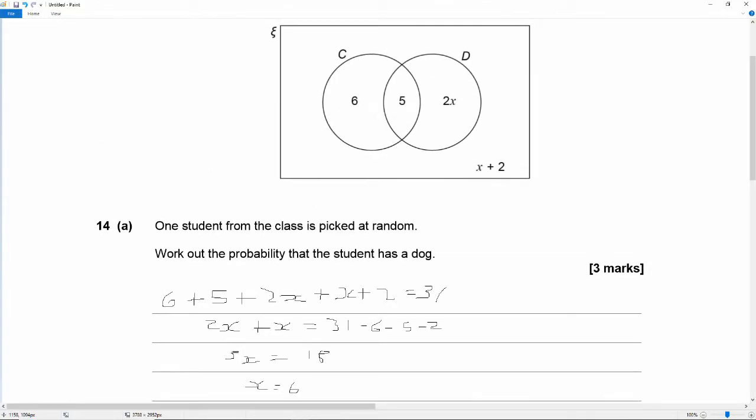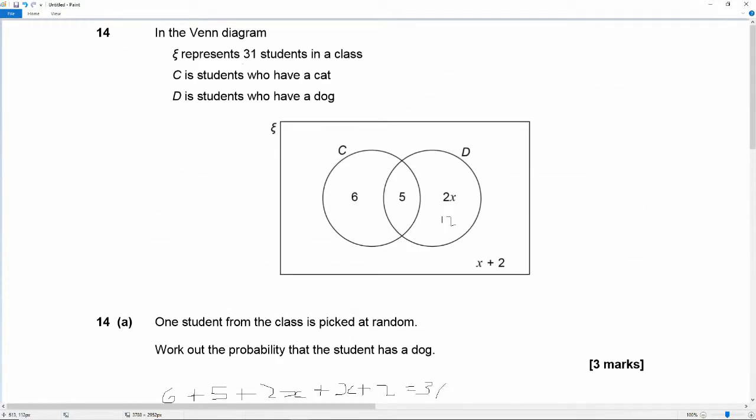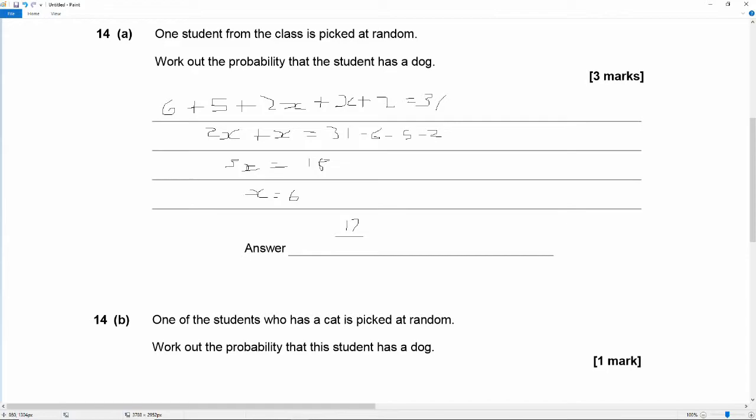So we can now fill in this diagram. 2 times 6 is 12. So 12 students have a dog but no cat. So we want to know how many students have a dog. There's the 12 that only have a dog and there's the 5 that have both a dog and a cat. So 12 plus 5 is 17 out of a total of 31 students. So that's 17 out of 31.